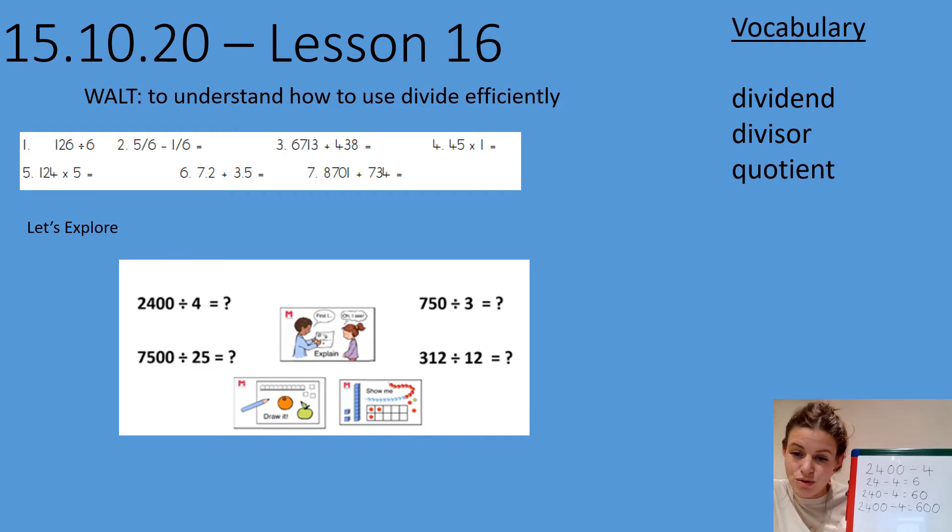So I've got 2400 divided by four is equal to 600. I've started by using my known facts and then multiplied by 10.